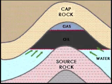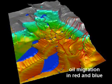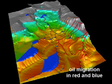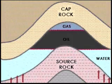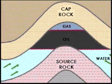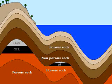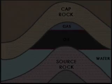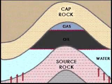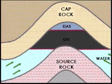So when we find reservoir rock full of hydrocarbons, it does not necessarily mean that the source rock is nearby. The trap in this animation is an anticline. Here is another example — all of this migration could have taken place millions of years ago. In this structure, called an anticline, we have three fluids: water, oil, and gas.